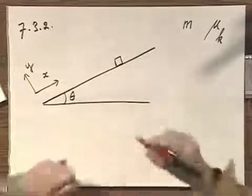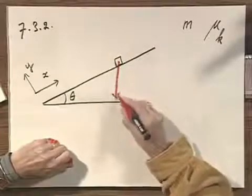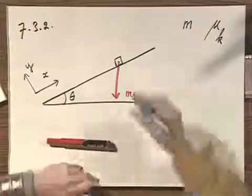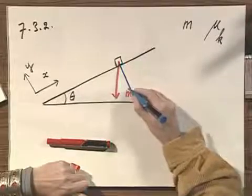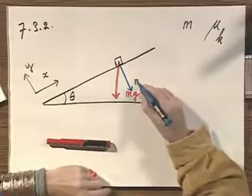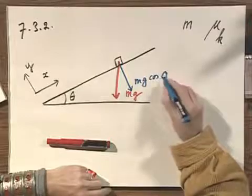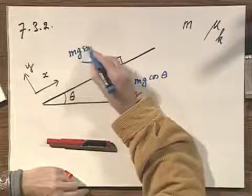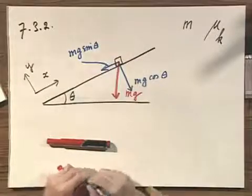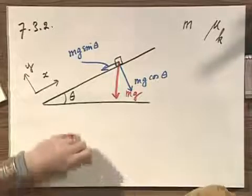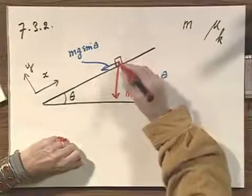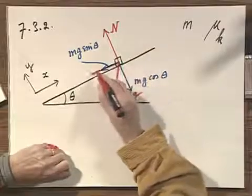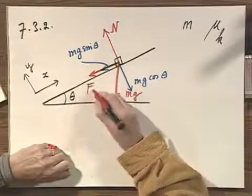I'm going to make a free body diagram. This is gravity, which is mg. I'm going to decompose gravity in two directions. One which is perpendicular to the slope, which is mg times the cosine of theta, and one which is parallel to the slope, which is mg times the sine of theta. Then there is the contact force from the slope onto this object. We normally decompose that into two: n, and there is friction, which of course must be in this direction — f friction.